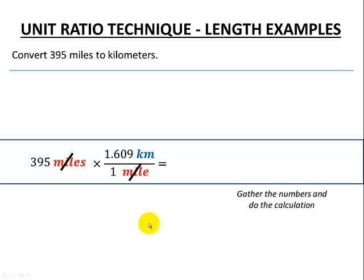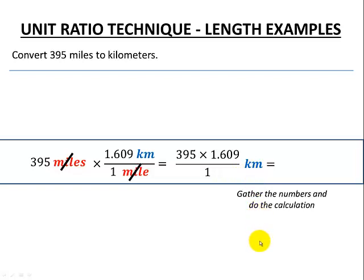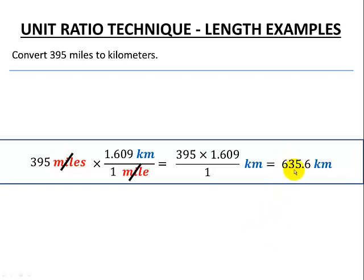We'll gather our numbers and perform the calculation. Our numbers are 395 times 1.609 divided by 1, and we can see we just have kilometers. So our final answer is 635.6 kilometers. For tests or assignments, we'll be given guidelines as to how many decimal places or significant digits to use.